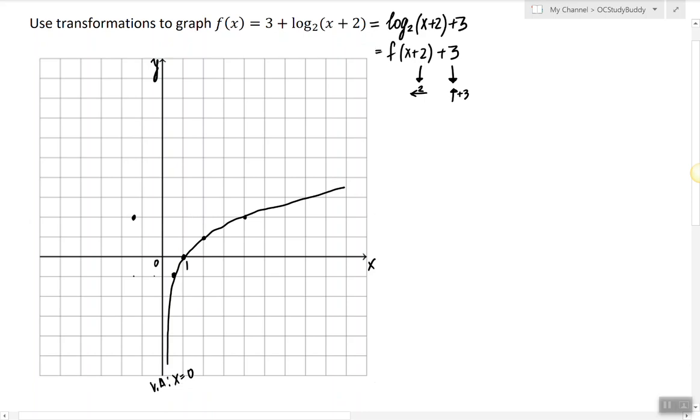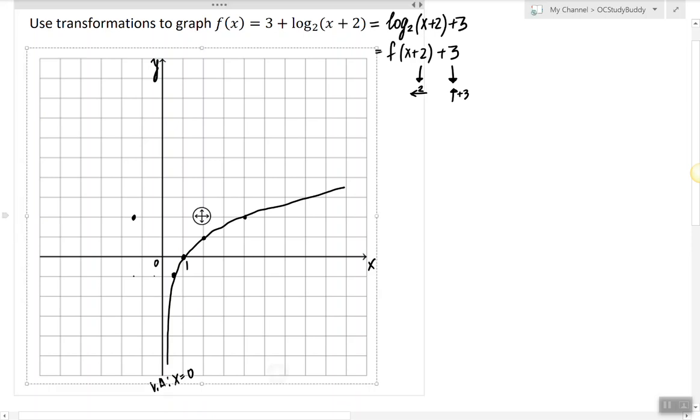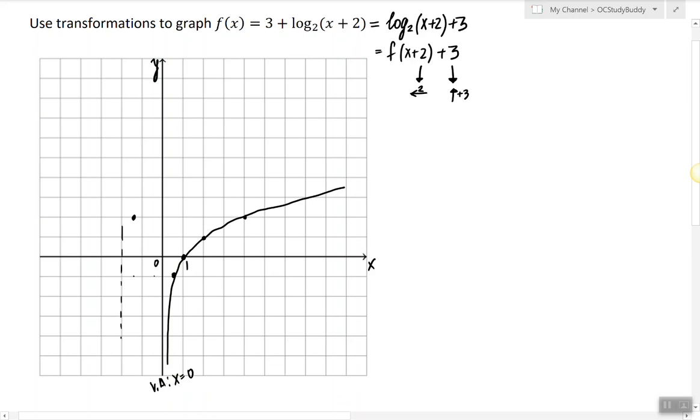Now the effect of such transformation on the vertical asymptote is the vertical asymptote will now be shifted 2 units to the left. So the vertical asymptote for the desired function is actually x equals negative 2, and I'm continuing with my shifts.